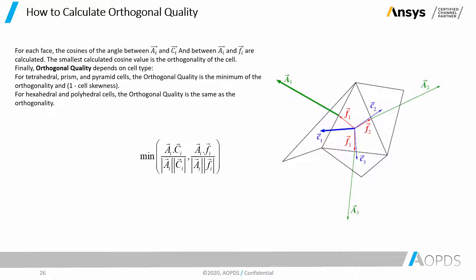One important question is: how can we calculate AI, CI, and FI? In this case, we have a 2D trial element that has three nodes, and each node has two components. Using those components, we can find each of these vectors. To know how to calculate that, you can see our other YouTube videos on the mathematical background of element quality and calculating warping angle and warping factor.